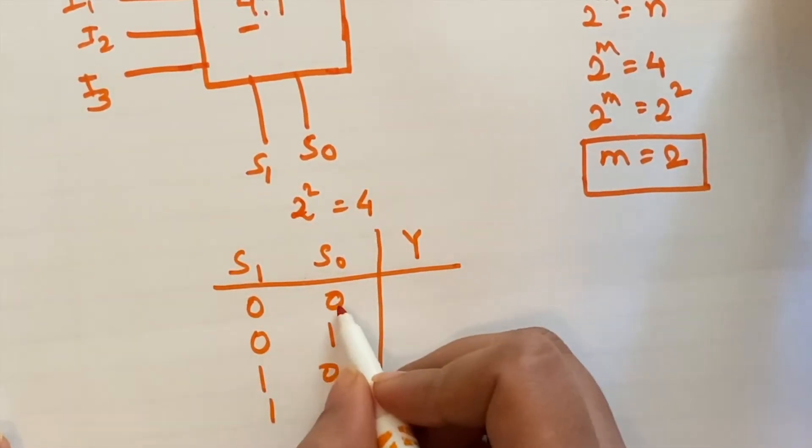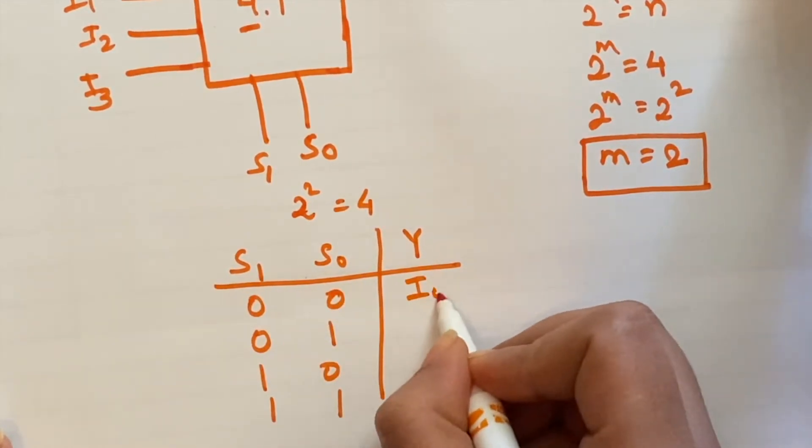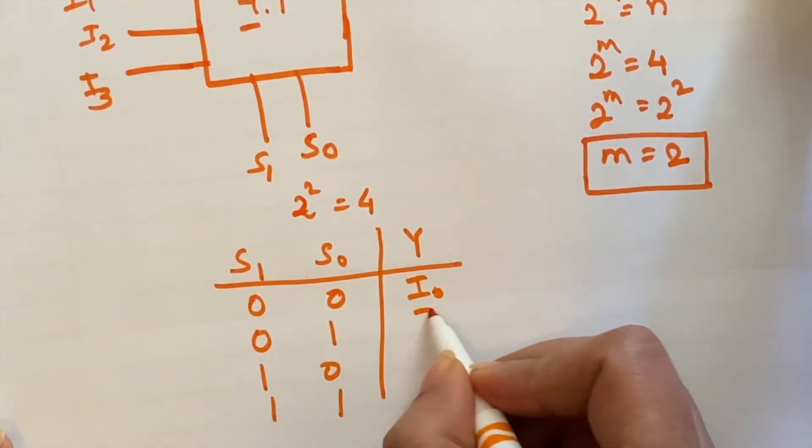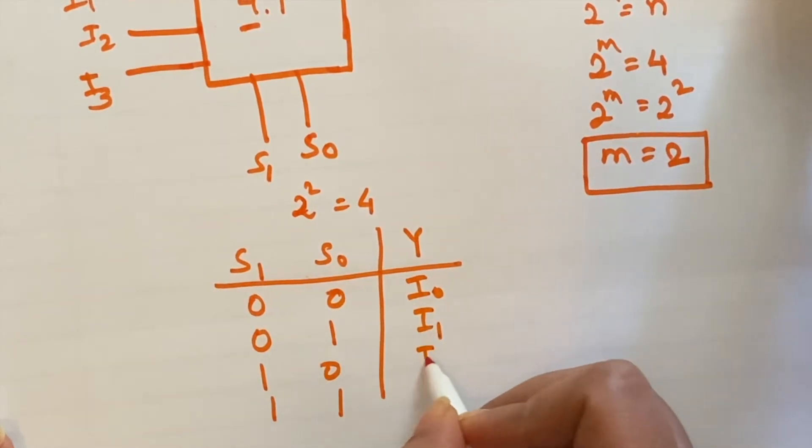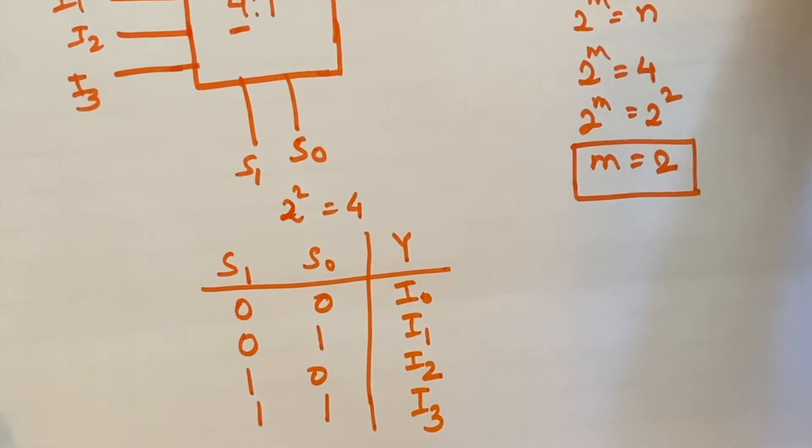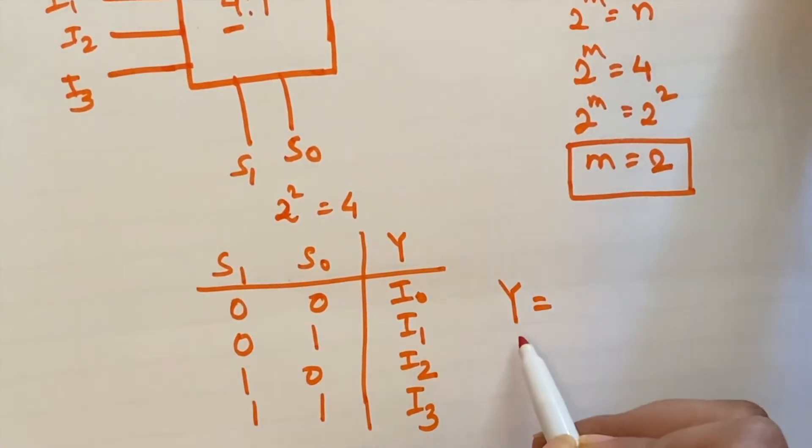When 0 0 will be the value of s1 and s0, output will be i0. i1, i2 and i3. Now let's check out the expression for the...